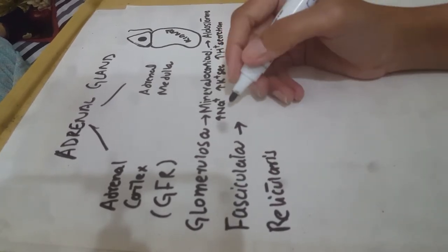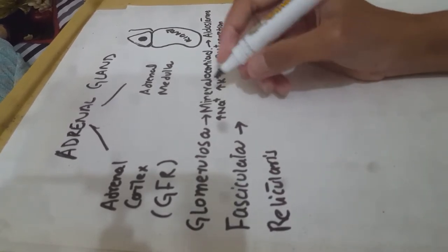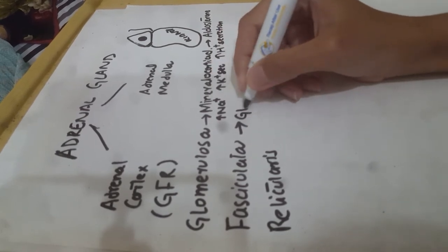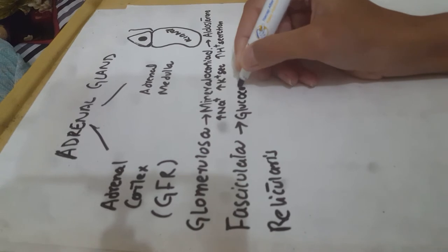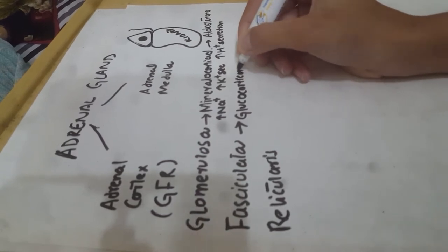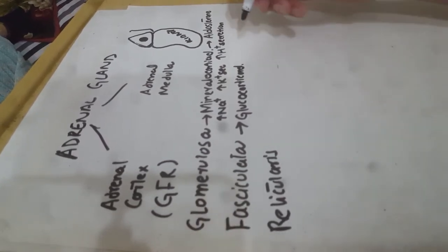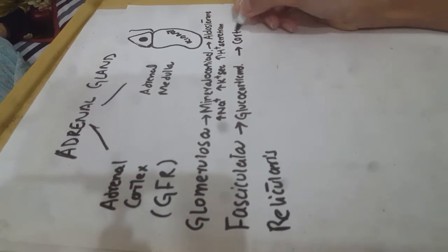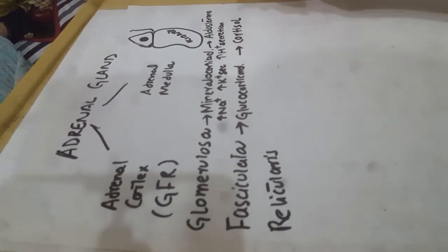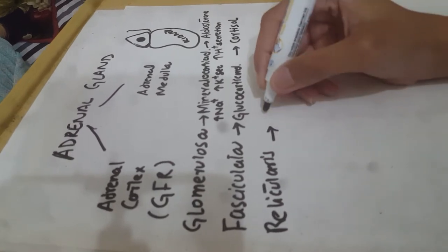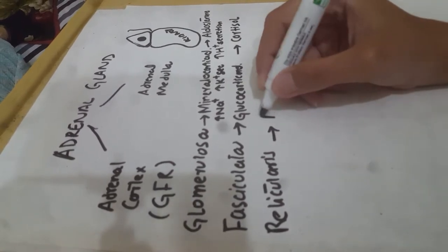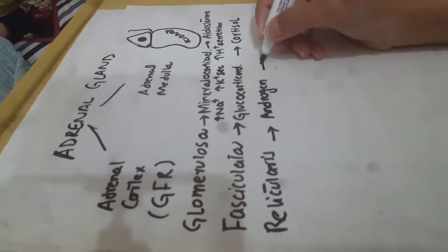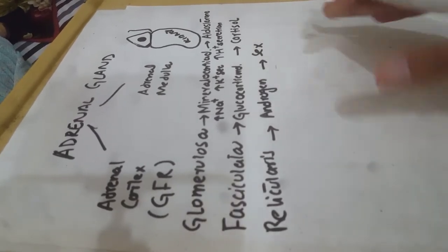In zona fasciculata we have glucocorticoids — the sugar hormone. The hormone produced is cortisol, which is the stress hormone. In zona reticularis we have androgens, which are sex hormones.